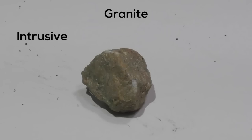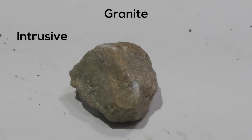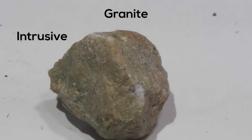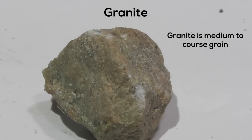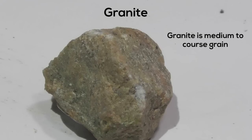Next, we have granite. Granite is an igneous intrusive or plutonic rock. It's made up of feldspar, quartz, and mica. It has medium to coarse grain crystals and a hardness between 5 and 5.5.